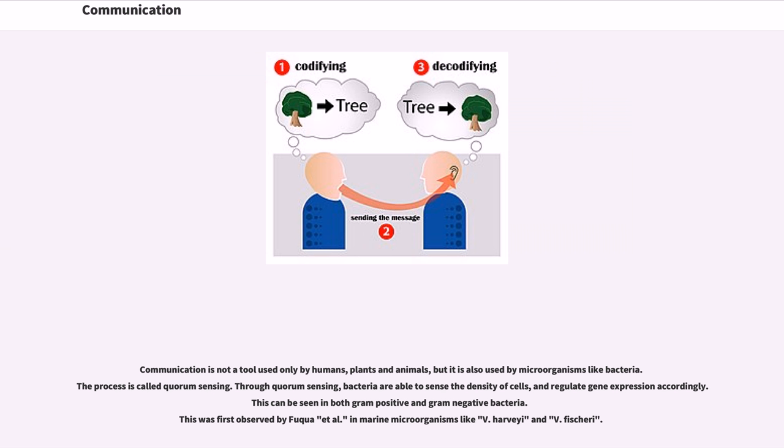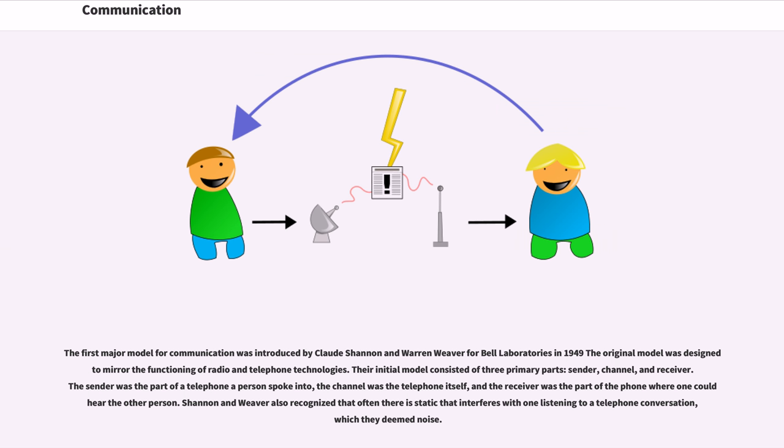The first major model for communication was introduced by Claude Shannon and Warren Weaver for Bell Laboratories in 1949. The original model was designed to mirror the functioning of radio and telephone technologies. Their initial model consisted of three primary parts: sender, channel, and receiver. The sender was the part of a telephone a person spoke into, the channel was the telephone itself, and the receiver was the part of the phone where one could hear the other person. Shannon and Weaver also recognized that often there is static that interferes with one listening to a telephone conversation, which they deemed noise.